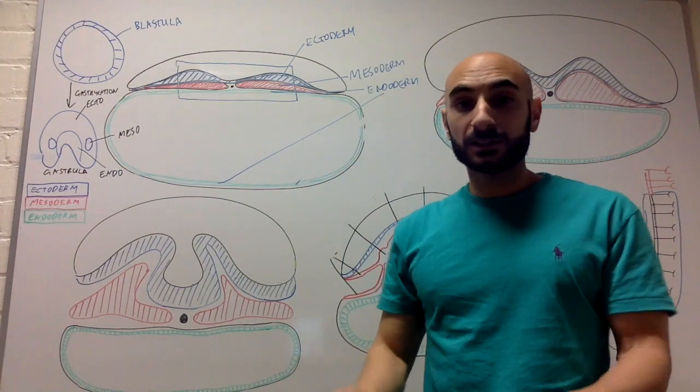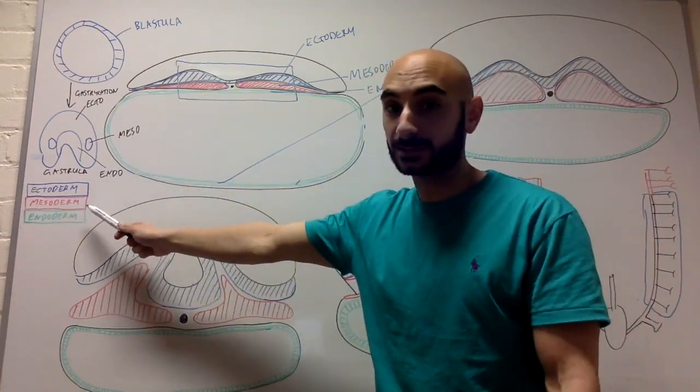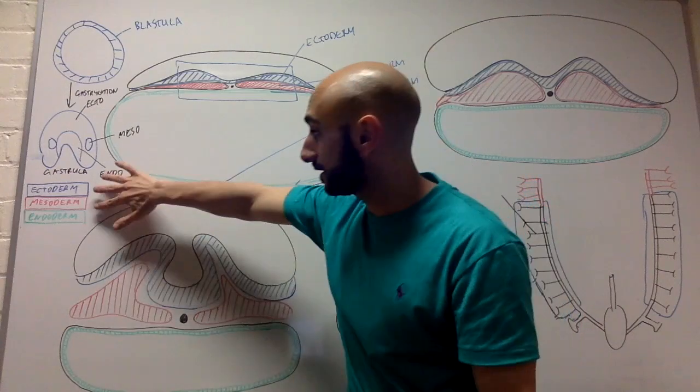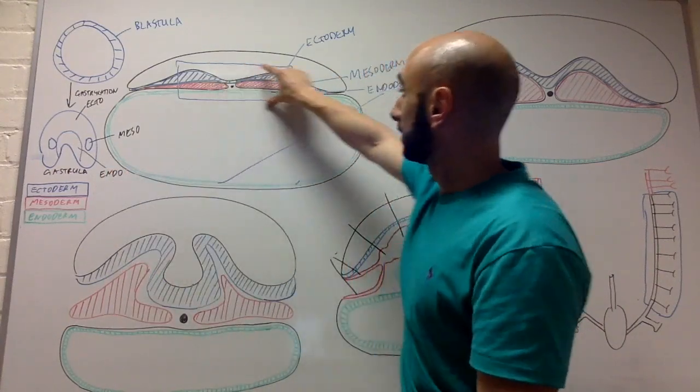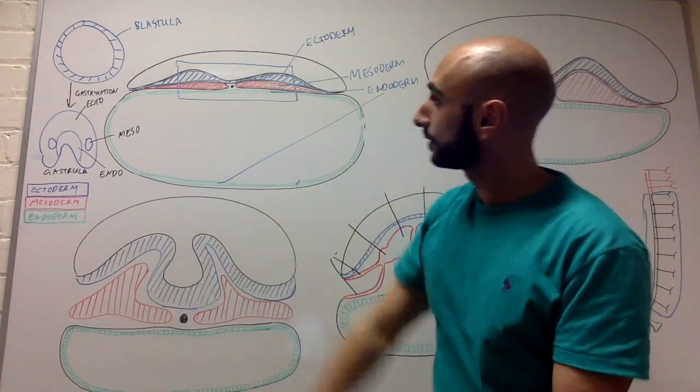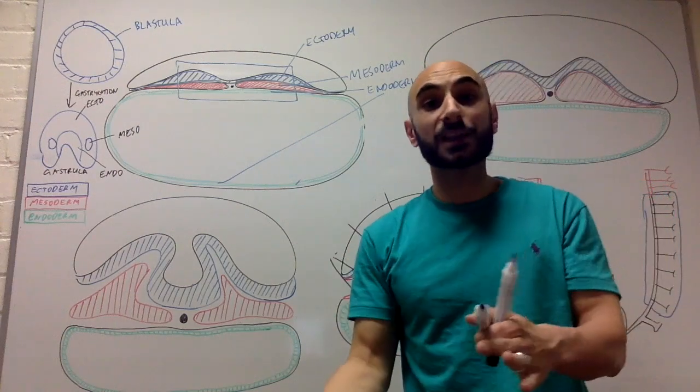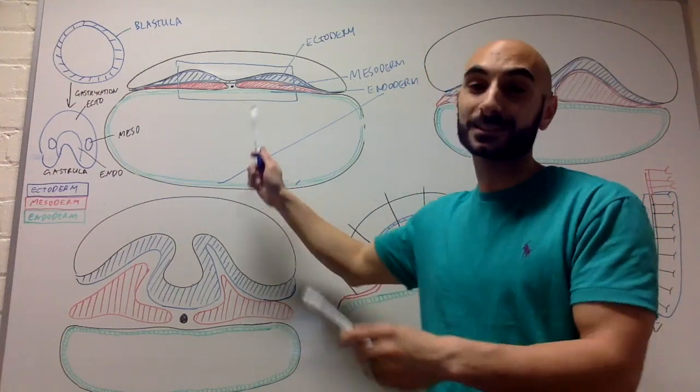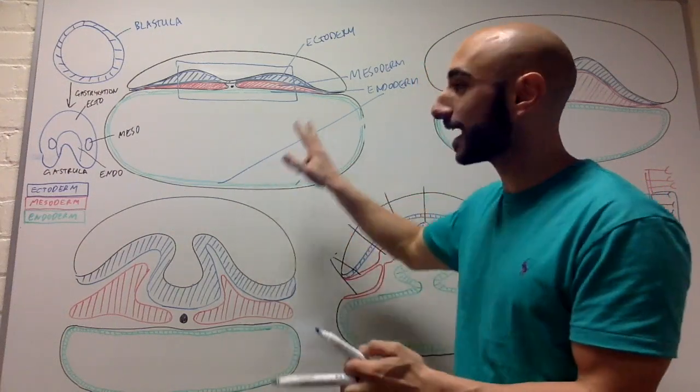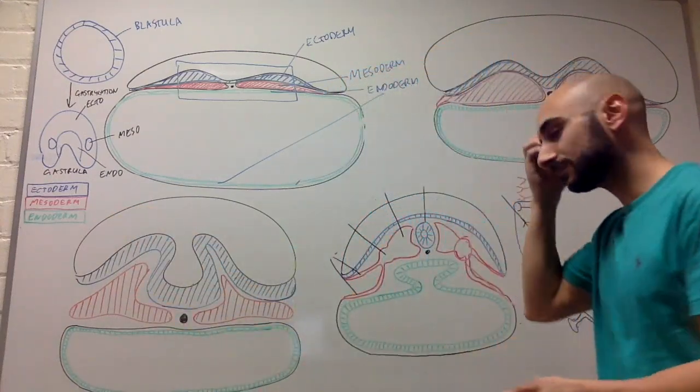If you don't know anything, just learn that the blastula will end up turning into these three layers, called the gastrula. And just look at it this way. This is a cross-section of the embryo. We have the ectoderm, mesoderm, endoderm. If you don't understand anything about embryology, at least know this. At least know the three layers. Ecto, meso, endo. Know those.